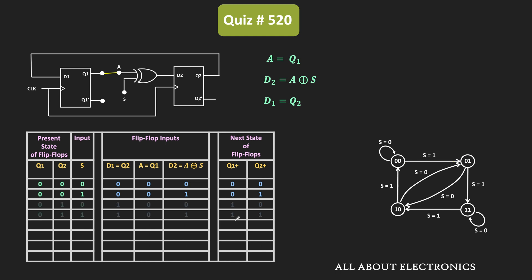When Q1 and Q2 are 0-1 and S is 0, the circuit goes into the 1-0 state. When S is 1, it goes into the 1-1 state. When Q1 and Q2 are 1-0 and S is 0, D1 = Q2 = 0 and A = Q1 = 1. So A XOR S = 1 XOR 0 = 1, meaning D2 = 1. Since D1 = 0 and D2 = 1, the next state is 0-1, matching the state diagram when the present state is 1-0 and S is 0.